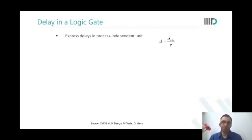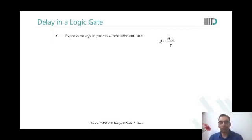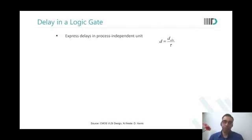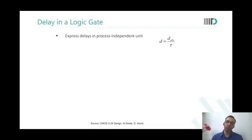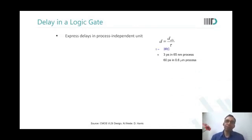The first step is to express delays in process-independent units, so the method is not specific to 65 nm, 40 nm, or 180 nm. We define a unit d, where d equals the absolute delay divided by tau, and tau equals 3RC.